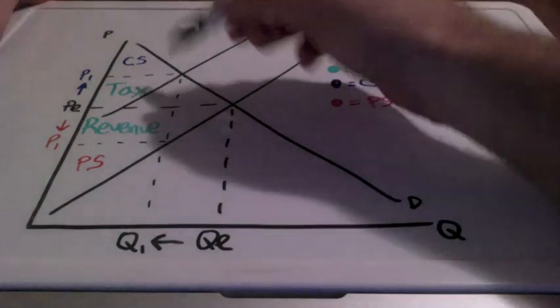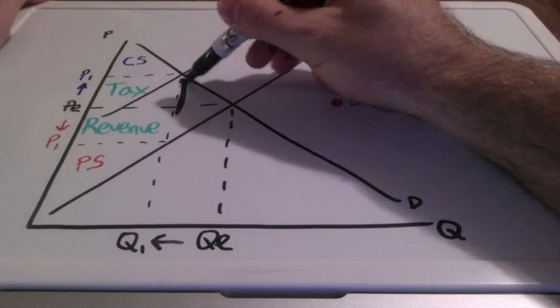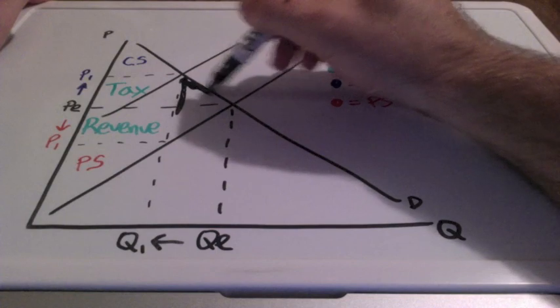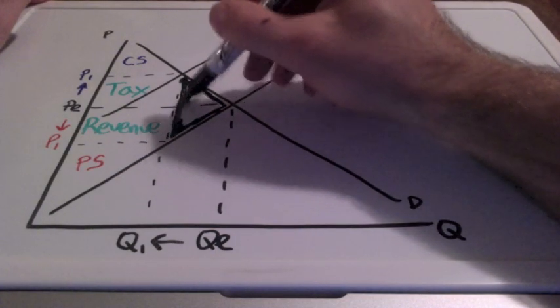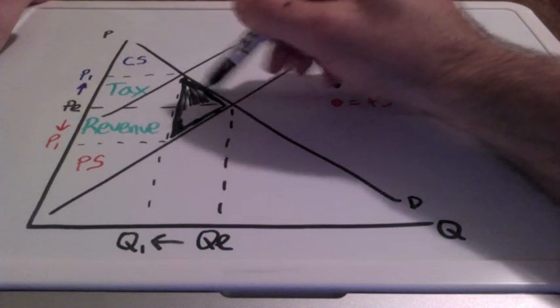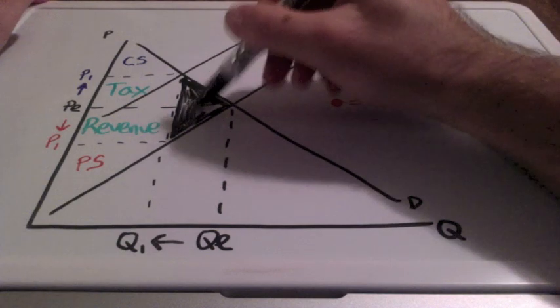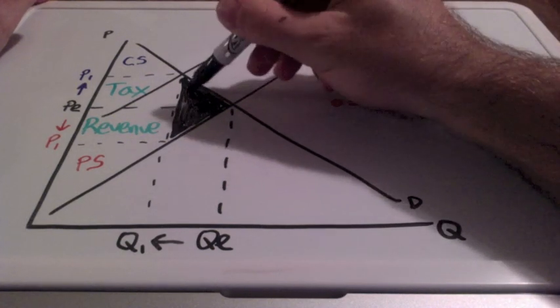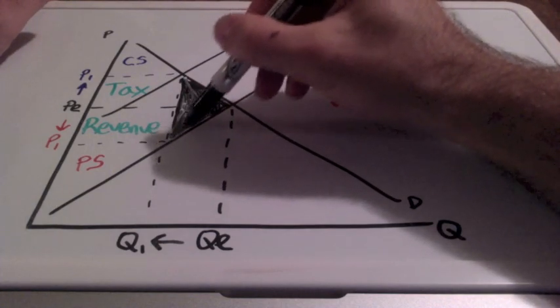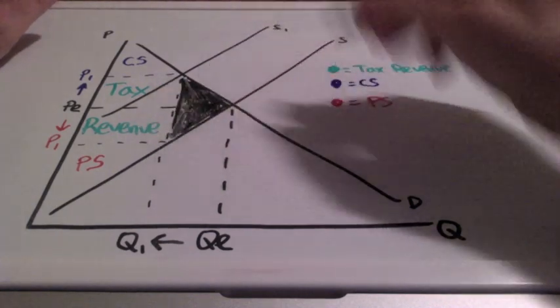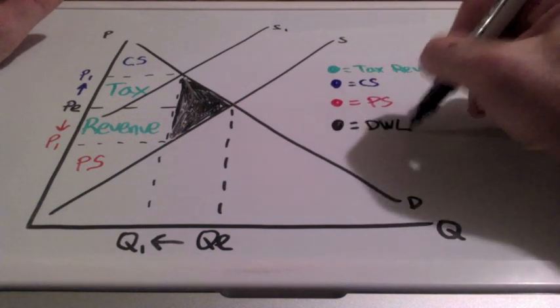But once again, we have a problem. This problem is being shaded in black. We have a loss of consumer and producer surplus that was once present before this tax. And we call this dead weight loss.